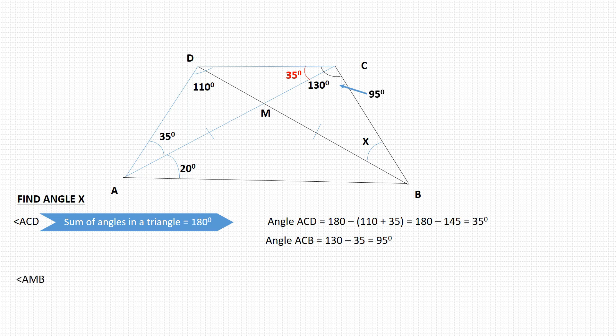Next, we're going to look at angle AMB. For AMB, again we consider triangle AMB and say the sum of angles in a triangle is 180 degrees. We know that the base angles are 20 degrees, that is MAB and MBA. And so we're going to do 180 degrees subtract 20 plus 20, and that gives us 140 degrees.